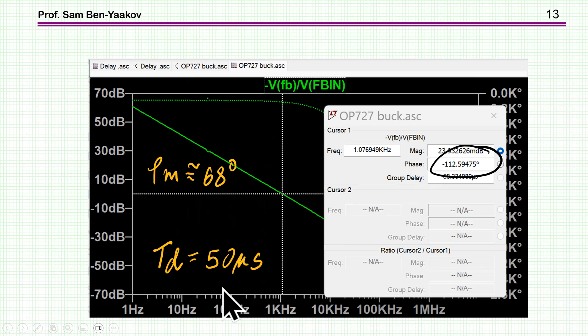Now here, I'm increasing the delay to 50 microseconds. And as you can see, it's already changing the phase lag. And it's getting now to 68 degree phase margin, which is still pretty good. And the system is still stable.